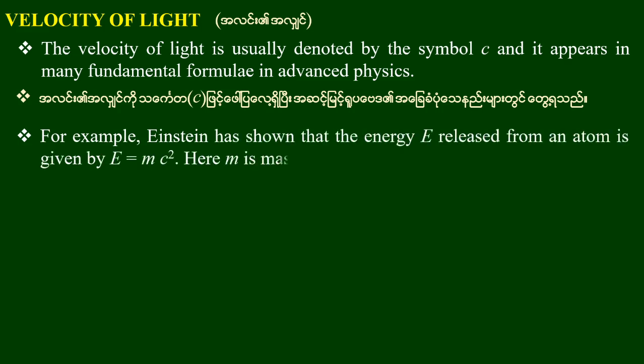Einstein has shown that the energy released from an atom is given by E is equal to mc squared. Here, M is mass, and thus C is an important physical constant.